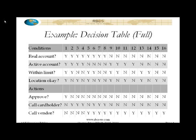Let's look at a decision table in particular. What we're going to use throughout this webinar is an example for an e-commerce site and the processing of orders — specifically the handling of a credit card, processing of the credit card by the back-end payment processing system. We have four conditions: real account, active account, within limits, location okay. Those are shown on the upper left side of the decision table. And we have three actions: approve, call card holder, and call vendor. Those are shown on the lower left side of the table.